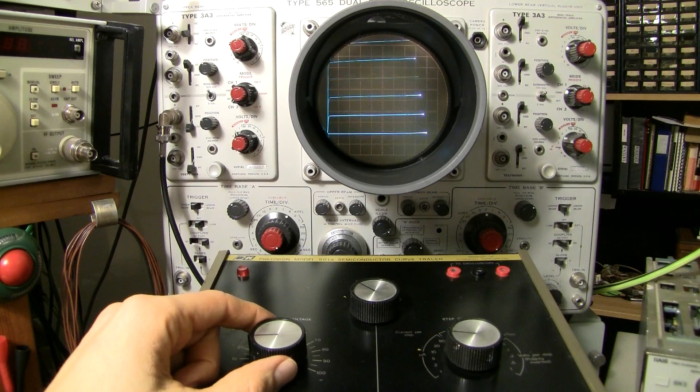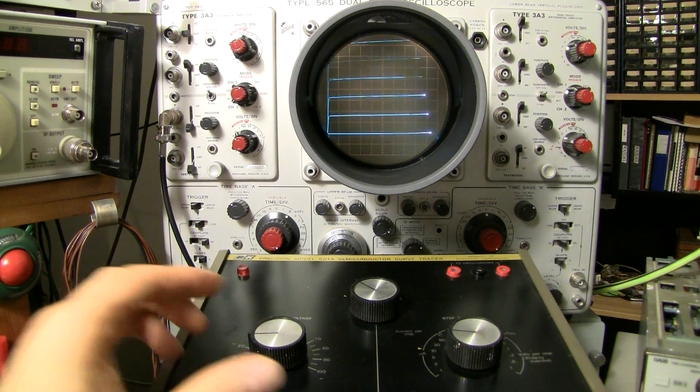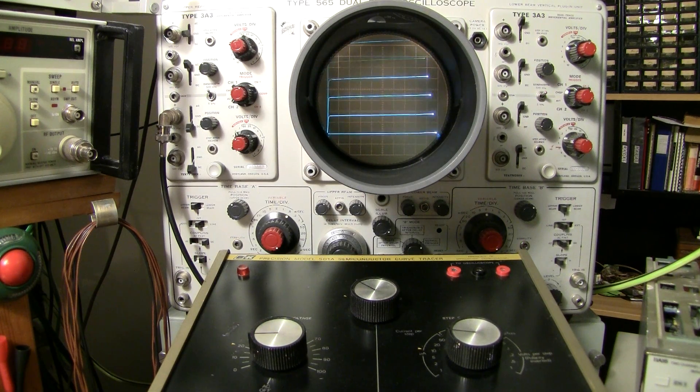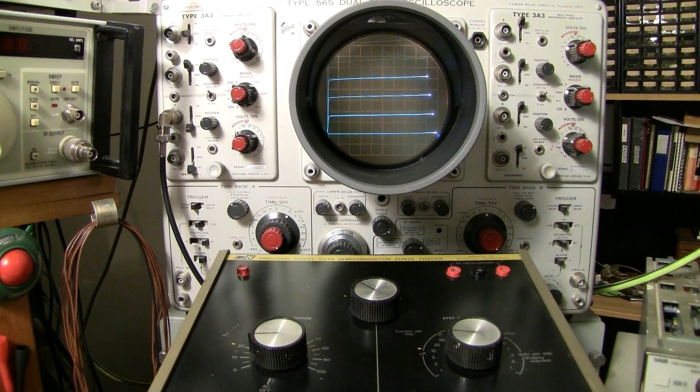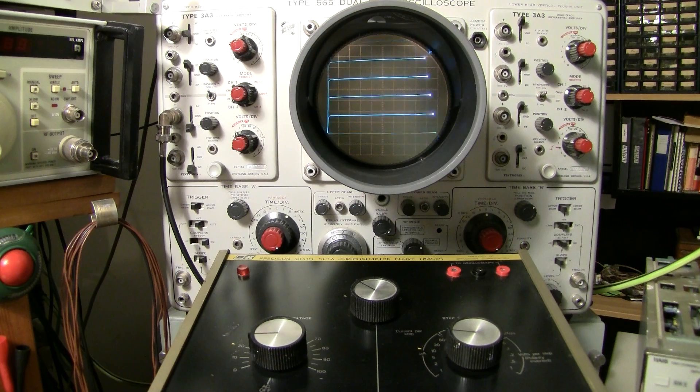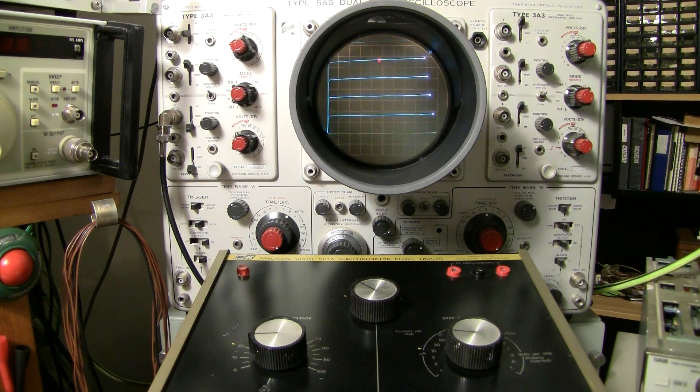Our measurement that we're going to make today is going to be at 5 volts which is the center of the screen. To make the collector current measurement we have to figure out the delta between two points or the difference between two points. We'll choose this point here and this point here.